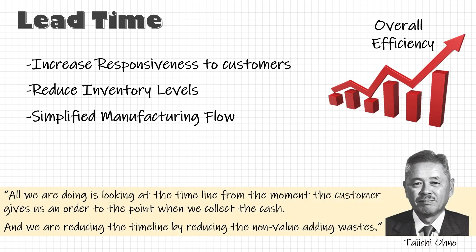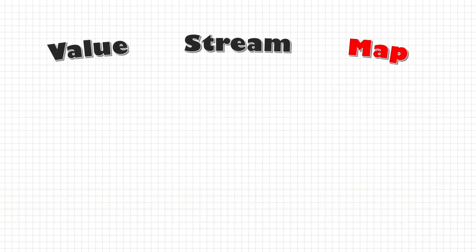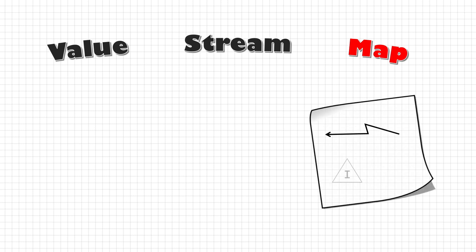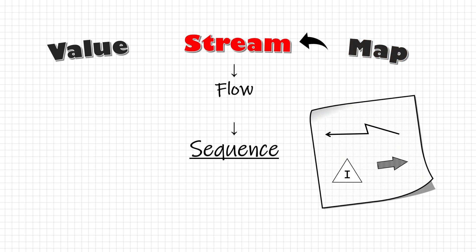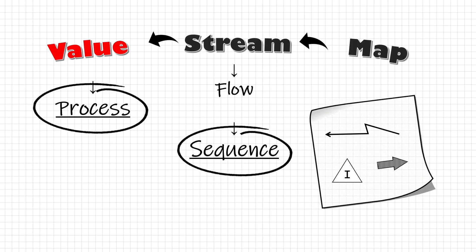This is exactly what we are going to do with value stream mapping. In VSM, we are going to map — that is, draw some lines or symbols on paper — the stream or flow, or a better word would be sequence. The sequence of value addition, or the sequence of processes that we are doing to manufacture the product. Basically, VSM is a visualization tool to understand the sequence of all processes on a piece of paper, and it includes all the steps and timeline required to deliver a product or service to the customer.